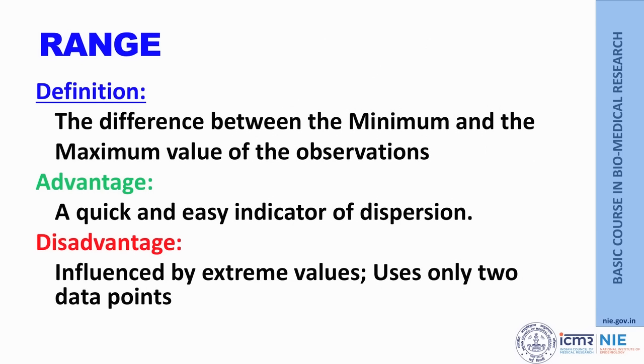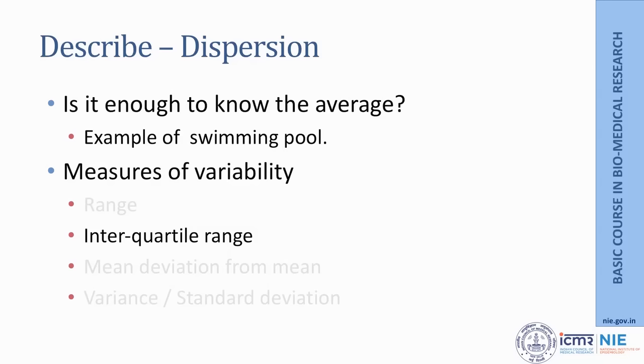One measure of variability is the range — the difference between the minimum and maximum values of the observations. An advantage is that it is a very quick and easy indicator of dispersion. However, like the mean, the range is influenced by extreme values, and it only uses two values — the first and the last — ignoring all values in between, which is a great disadvantage.